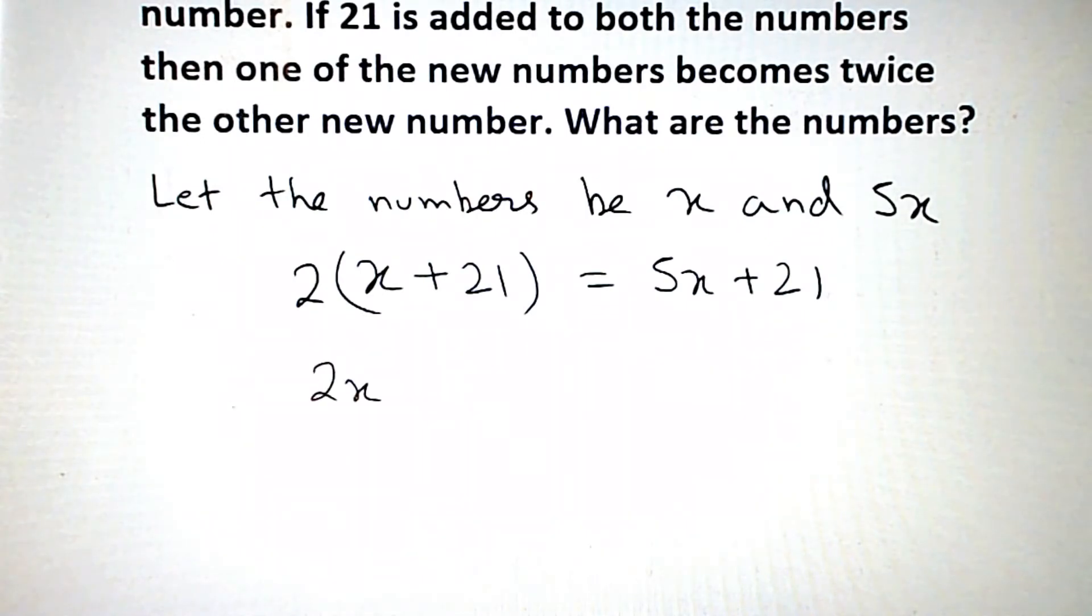We need to solve this equation. 2x plus 42 is equal to 5x plus 21.